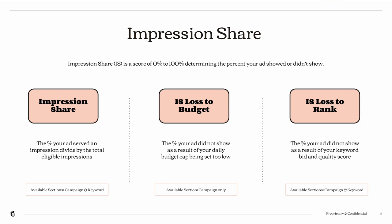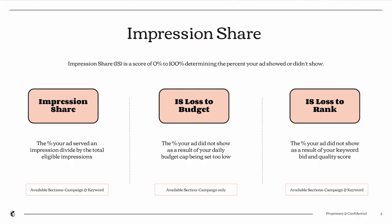Starting with key terminology — first is impression share. Impression share is a column you can add into your Google reports to help inform how often your ad showed. It's a percentage that Google tells you: out of the times you were eligible, you showed X percent of the time. It ranges from 0% to 100%, where 0% means your ad didn't show at all and 100% means your ad showed every time it was eligible. If budget is the cause of lost impression share — which is also a column you can add to your reporting — this tells you the campaign budget cap is set too low, so you're not spending as much as you could be, and spending more often means stronger results within campaigns that have strong keywords.